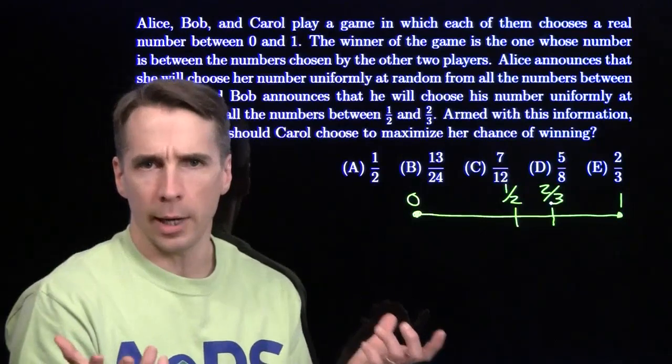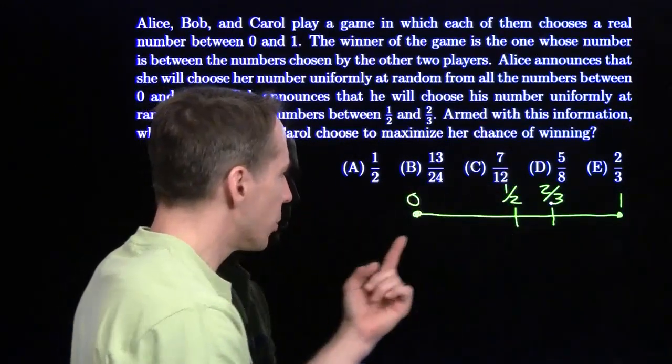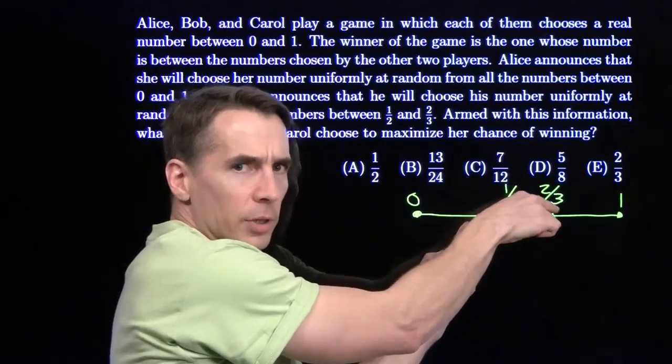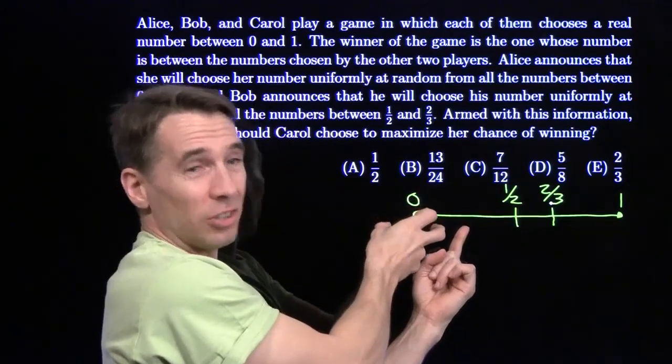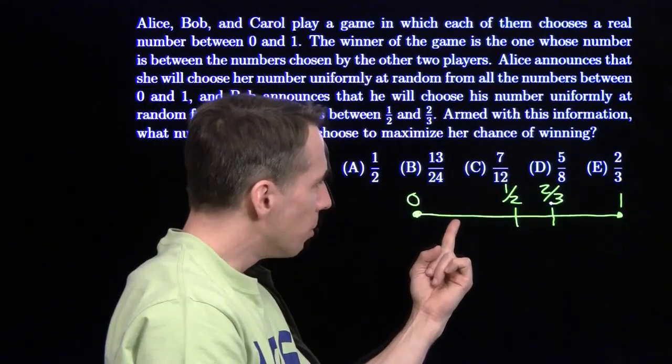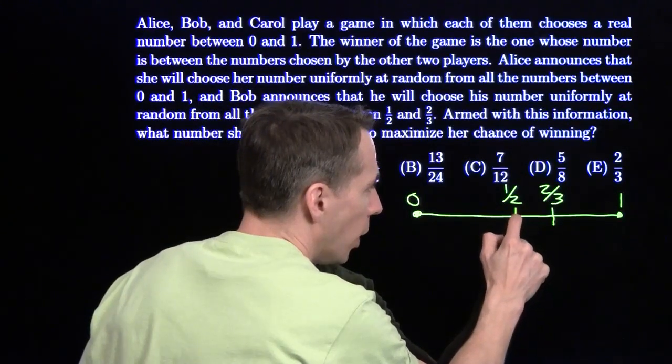Then we think about where Carol could choose. Say she chooses in this first interval from 0 to 1/2. Bob always ends up on the right, so we need Alice to end up on the left. To get as much of Alice on the left as we can, we're going to move Carol as far to the right as possible in this interval, right to 1/2.